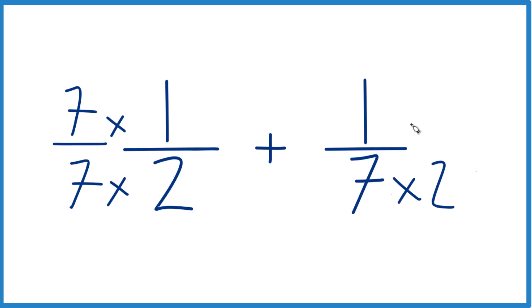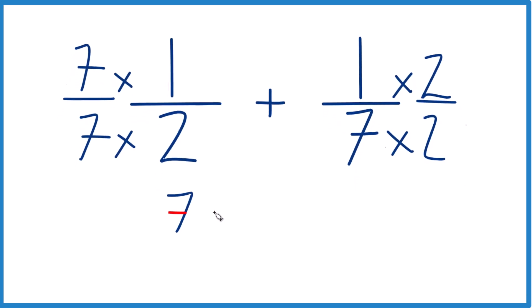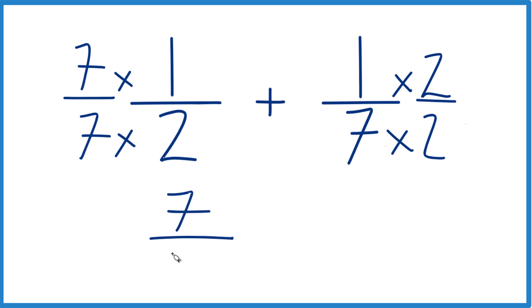Over here since we're multiplying by 2 let's multiply the numerator by 2. 2 over 2 is 1. But now 7 times 1 that's 7. 7 times 2 is 14.